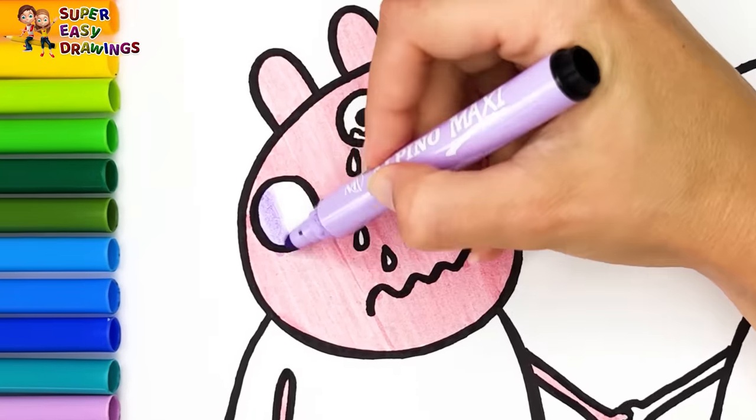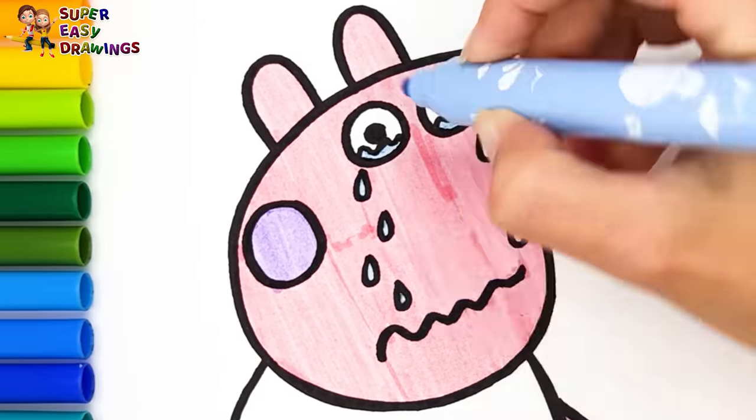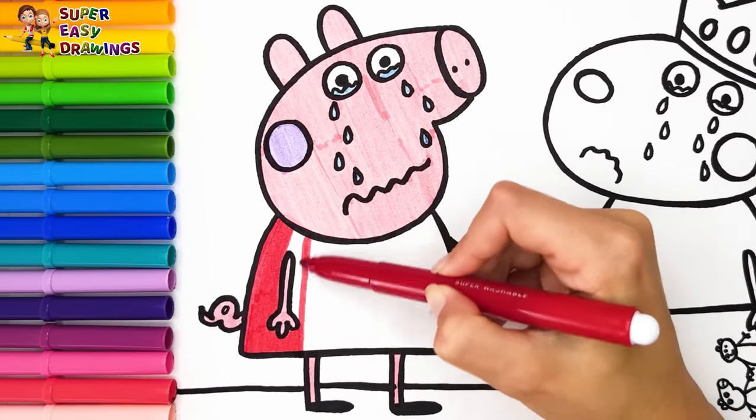Then I use light purple for her cheek. I color the tears light blue. I color her dress with this red marker.